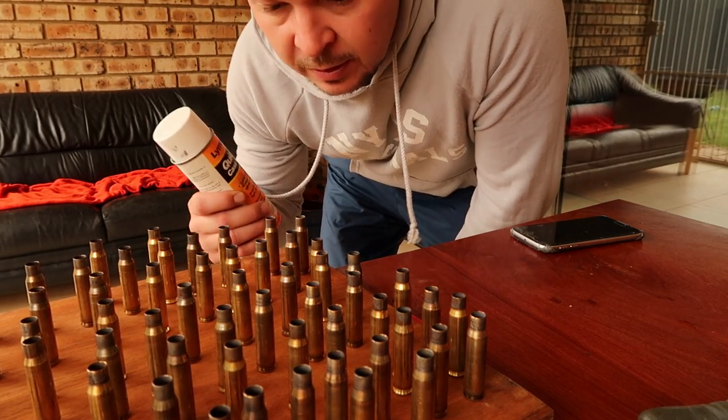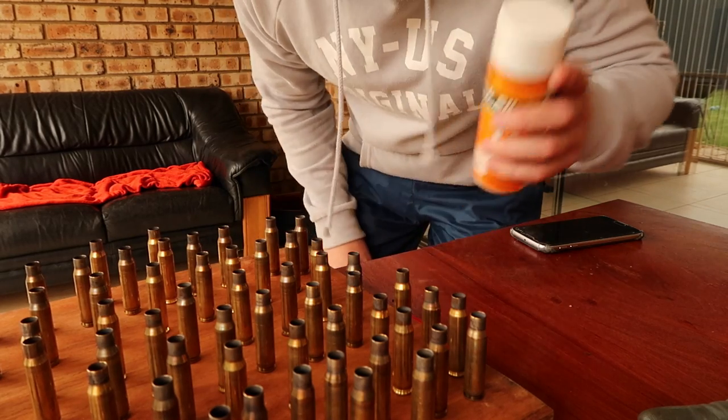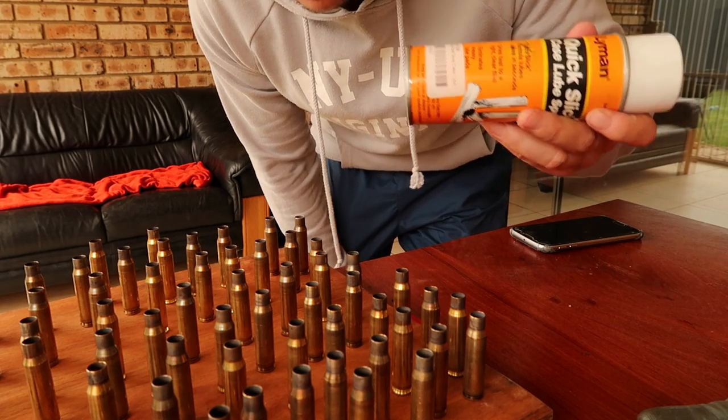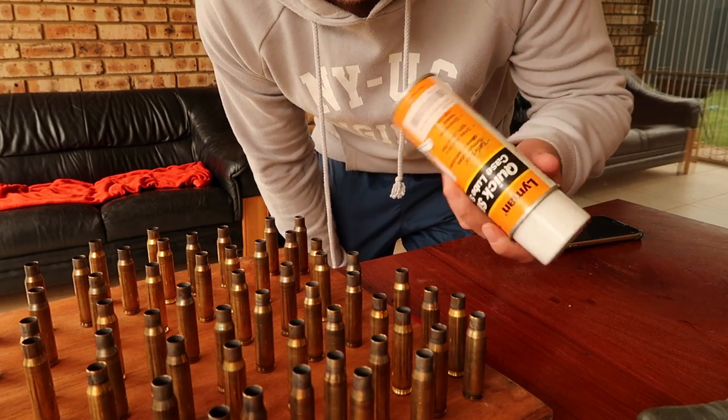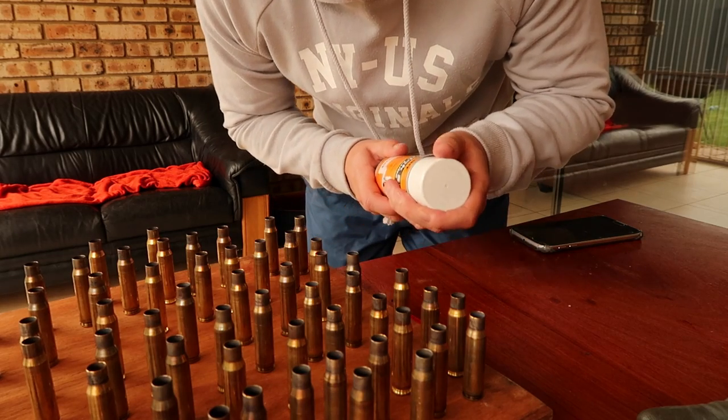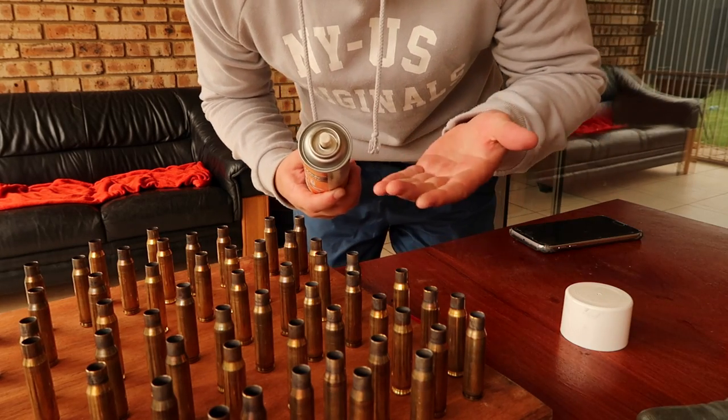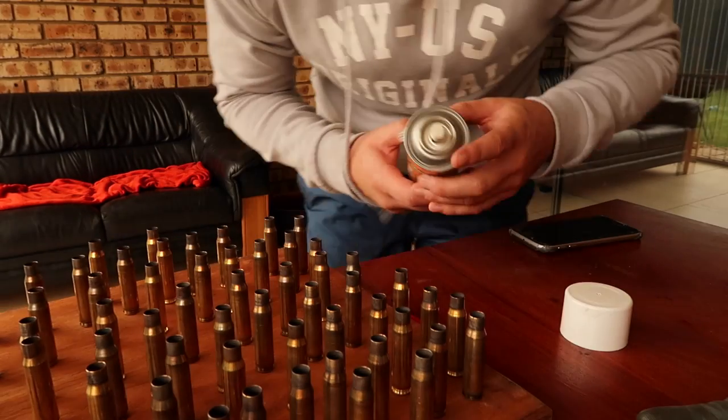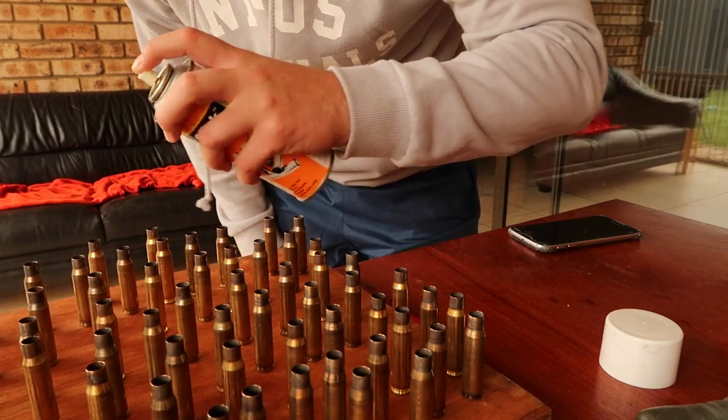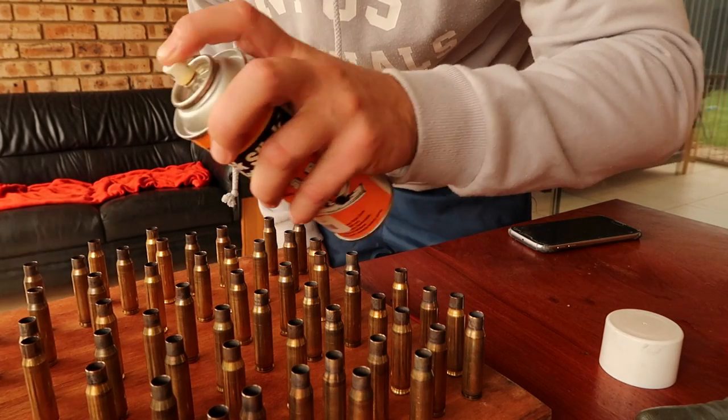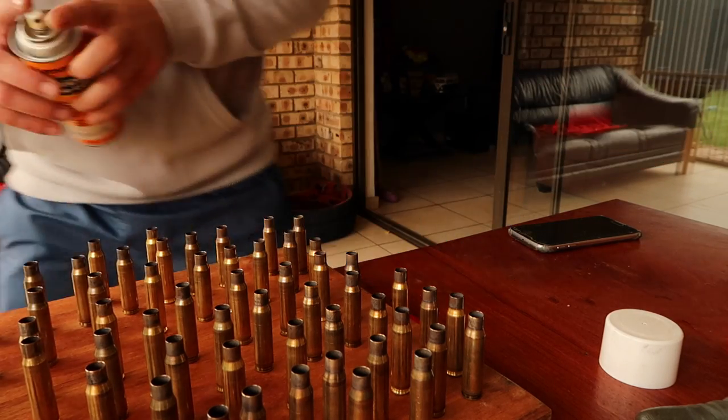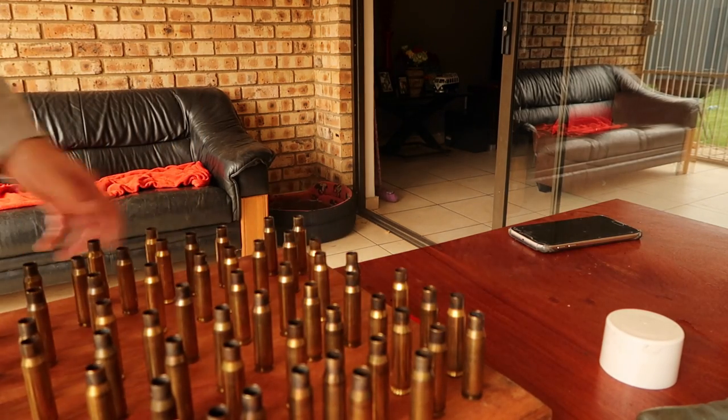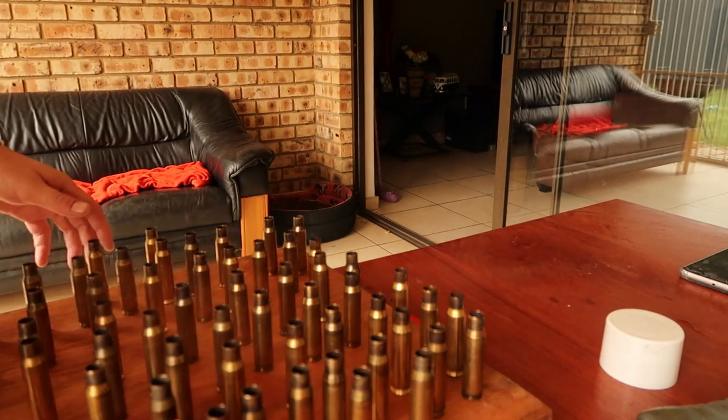The second step for the reloading process of the .308 brass. I make everything soft with the flame and I have to clean it. This is spray and cook for brass, so I spray it and put them in the die so that they can resize.